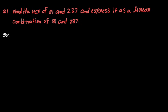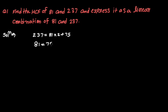Let us come to the solution. First, let us find the HCF of 81 and 237 using Euclid's division algorithm. Among these two numbers, 237 is greater than 81, so we divide 237 by 81. The quotient is 2 and the remainder is 75. In the second step, we divide 81 by 75; the quotient is 1 and the remainder is 6.